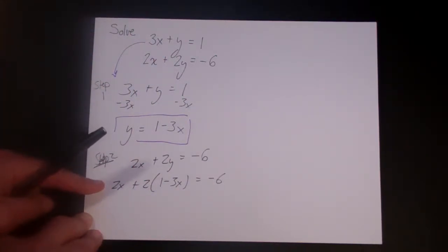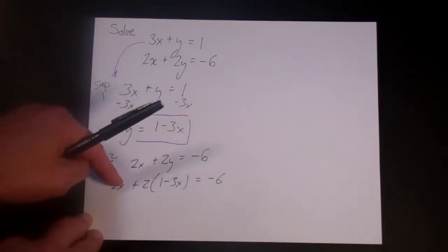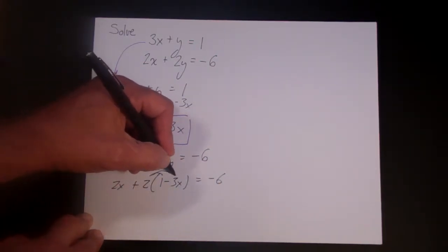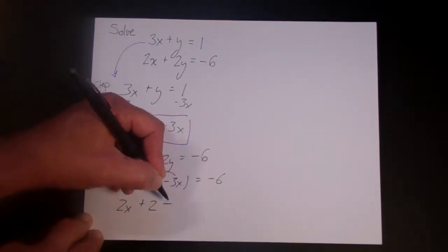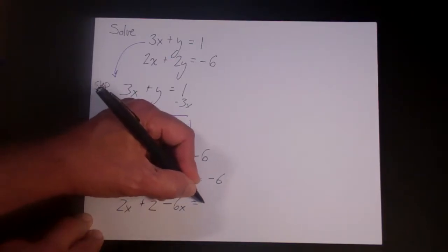And now let's solve this. This is just like the problems that we did in chapter 1. We have one equation with one variable, so we want to distribute the 2, and you want to be very careful here. 2x plus 2 minus 6x is equal to minus 6.